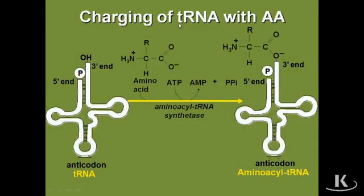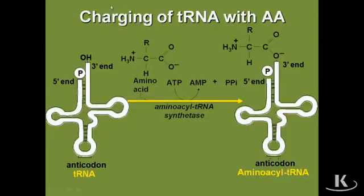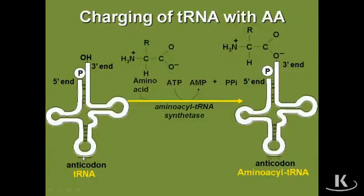Let's talk for a minute about how a codon can specify a particular amino acid. You'll remember from earlier that the structure of a tRNA molecule is this classic cloverleaf structure. There were two important parts to this tRNA molecule: the three prime end, to which an amino acid is going to be covalently attached, and the anticodon sequence, which helped specify which messenger RNA it is going to bind to.